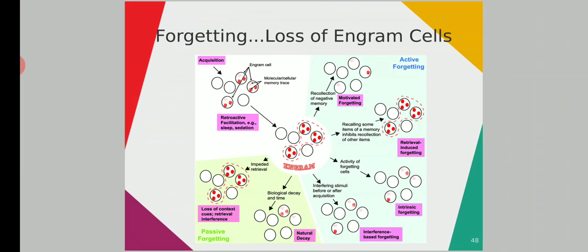What is forgetting? Forgetting is the decay of engram cells with time. The red dots are the engram cells — they are the trace of memory. Forgetting can be of two types. It can be active forgetting: sometimes we try to forget something painful, and there are definite types of neurotransmitters which help to destroy the engram cells. You can see active forgetting on the right panel — the engram cells are decaying. Sometimes it can be intrinsic forgetting, where some external stimulus can destroy your engram cells.